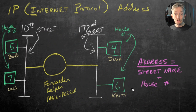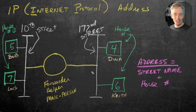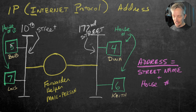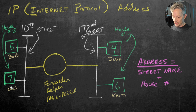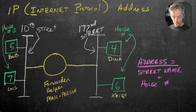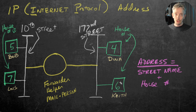Here in this diagram, I've got two streets: 10th Street and 172nd Street. Bob lives on 10th Street and Lois lives on 10th Street, and those are their house numbers. So if we ever need to send mail to Bob or Lois, we send it to 10th Street, house five for Bob and house seven for Lois. Over on 172nd Street, we have Dina at house number four and Keith at house number six — they're uniquely identified.